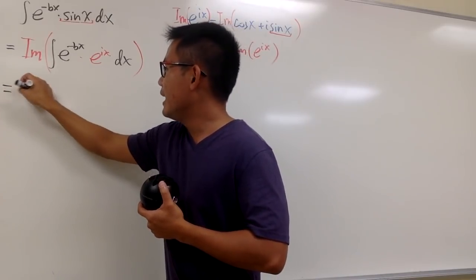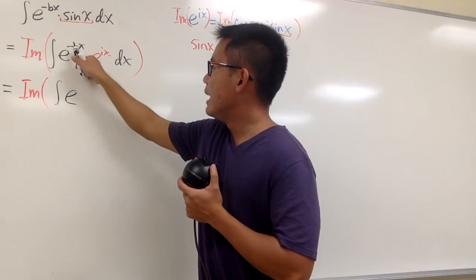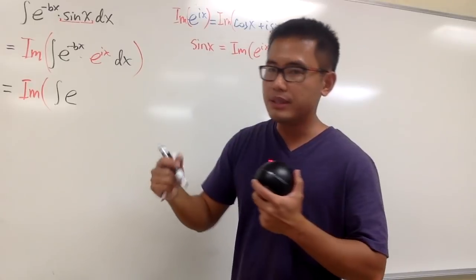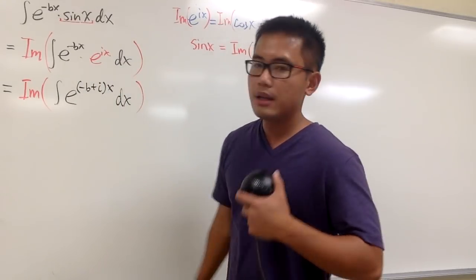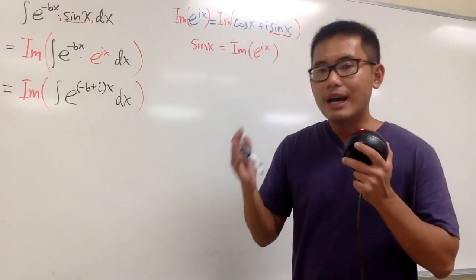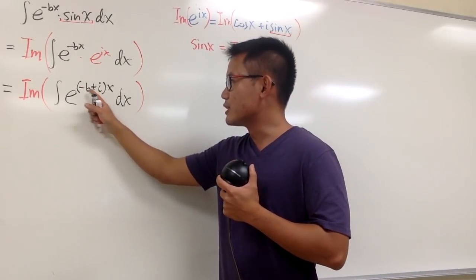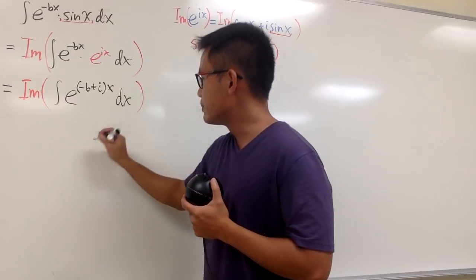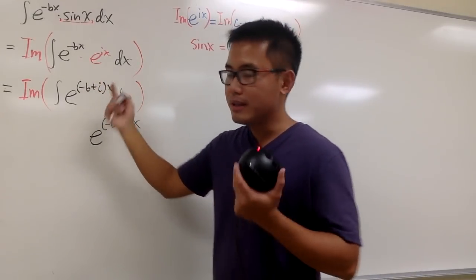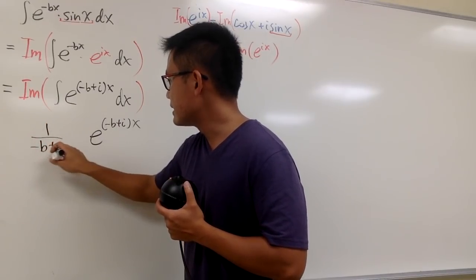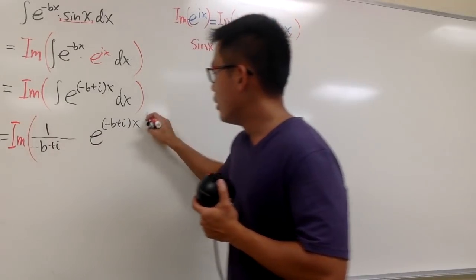We have the Im right here and the integral. They have the same base, so I can combine the powers by adding them together. Both have x, so the exponent becomes (negative b plus i) times x, with dx. To integrate e to the (negative b plus i)x, just like integrating e to the 3x gives e to the 3x times 1 over 3, this negative b plus i is just like a number. So the result is 1 over (negative b plus i) times e to the (negative b plus i)x, and we still focus on the imaginary part.